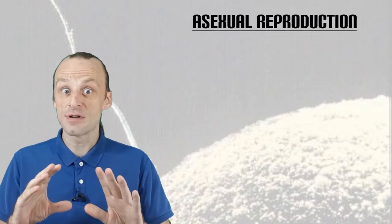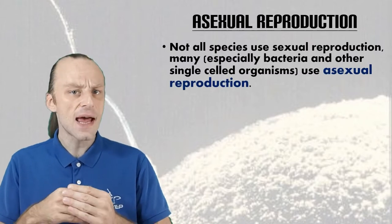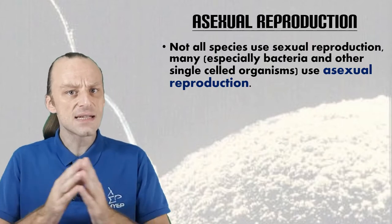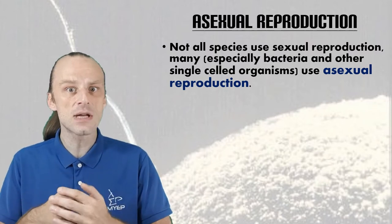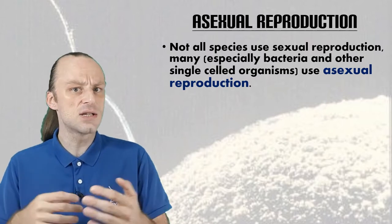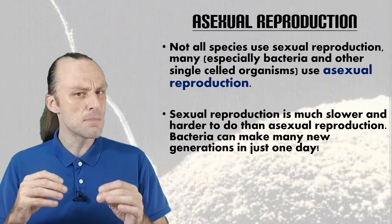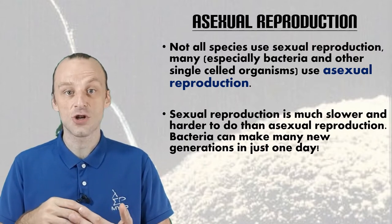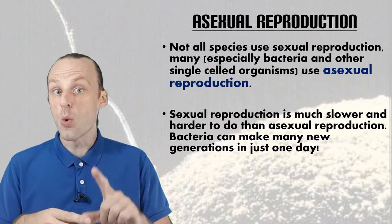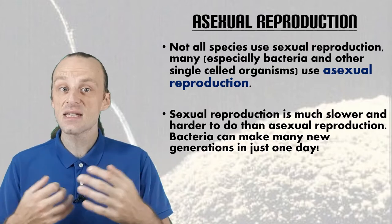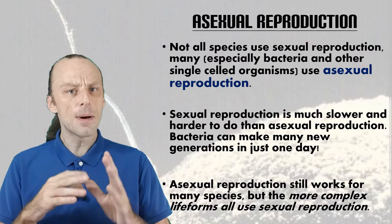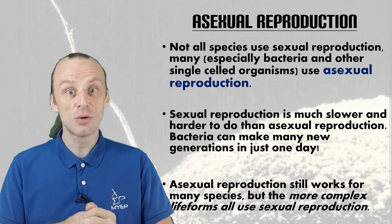Many species use sexual reproduction, but not all — and in fact the process that came first is asexual reproduction. Let's just take a little sidetrack on that to help us understand better. Asexual just means without sex, and some of the species that use asexual reproduction include bacteria and many types of plants. Asexual reproduction came first and it is still used today. Sexual reproduction is actually much harder to do and slower than asexual reproduction. A bacteria can divide and create many new generations in just one day or even a few hours — one bacteria can become two, two can become four, eight, 16, 32, and so on. Asexual reproduction works well for many simpler species, but most of the more complex species on earth now use sexual reproduction instead.